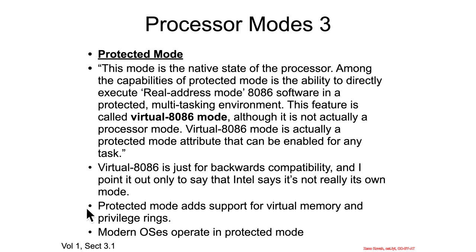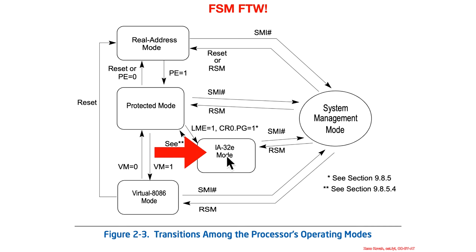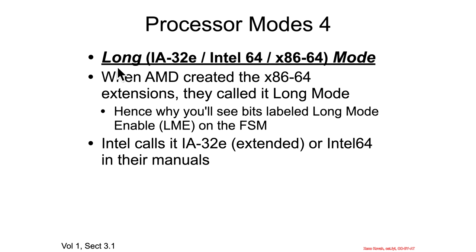Protected mode overall is important because it adds the nice functionality like virtual memory and privilege rings — the capability to actually isolate the kernel from user space. All modern operating systems are going to be executing in protected mode. From protected mode, you can set some bits and find yourself in IA32E mode, or long mode — the actual 64-bit mode. AMD originally created the x86-64 extensions and called it long mode, which is why on the finite state machine you'll see LME, long mode enable. Intel calls it IA32E or Intel 64, but we're just going to call it x86-64.